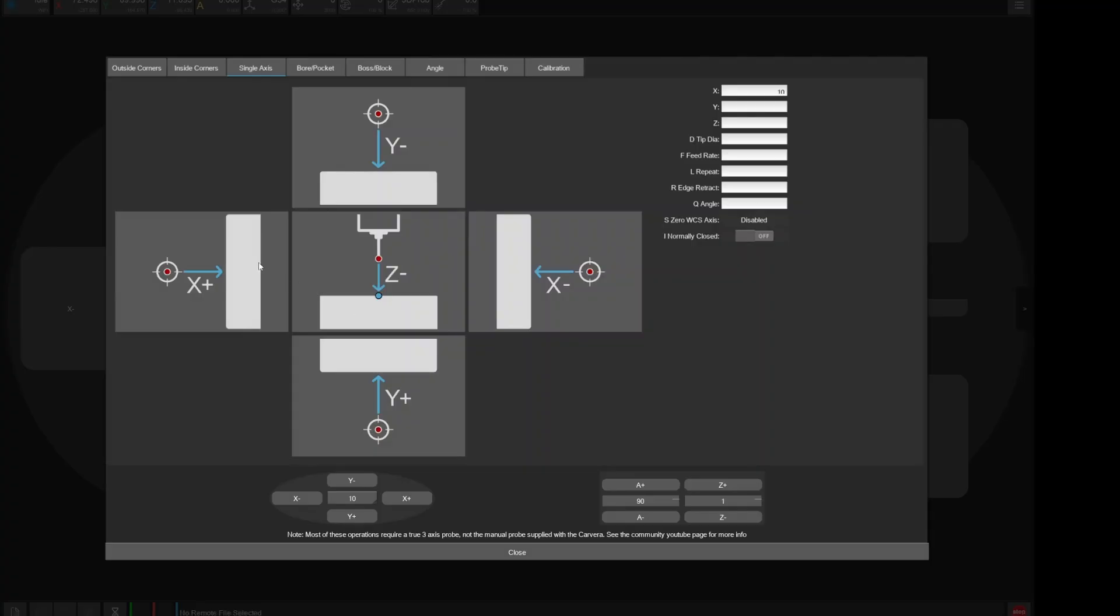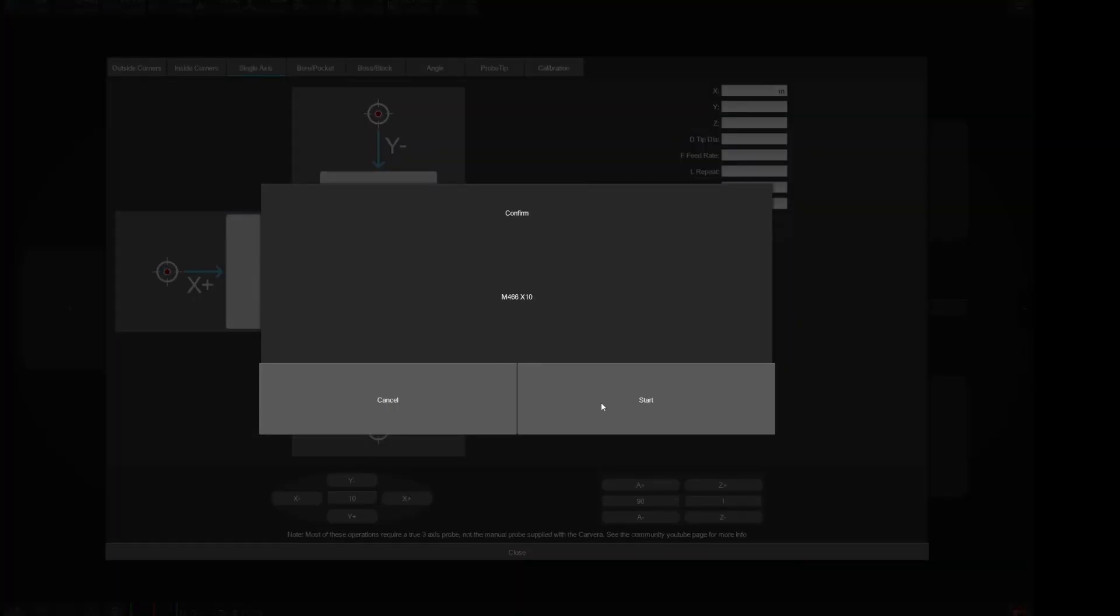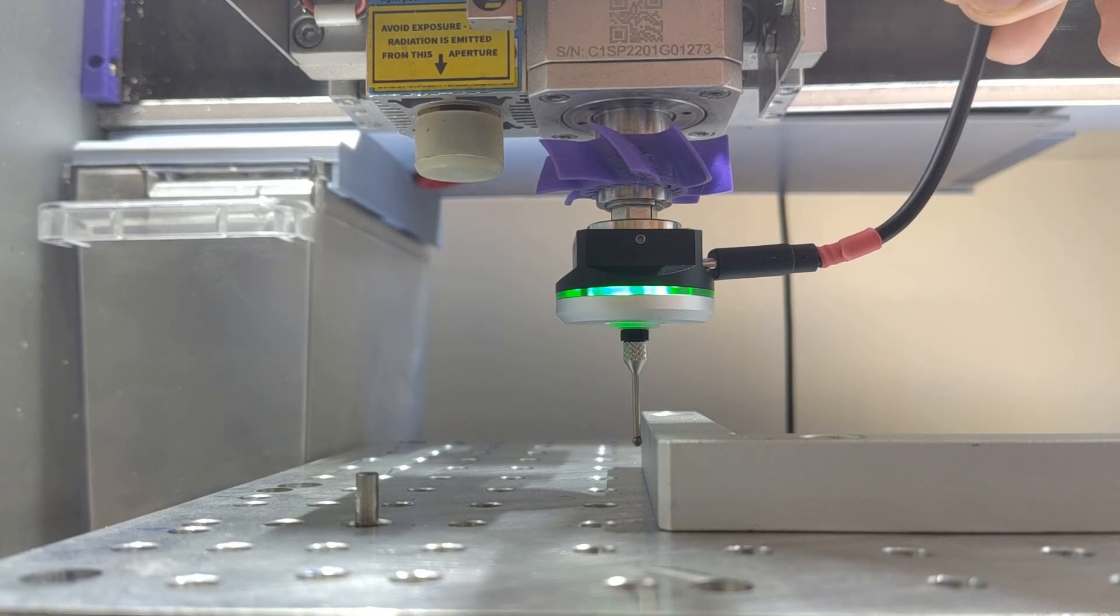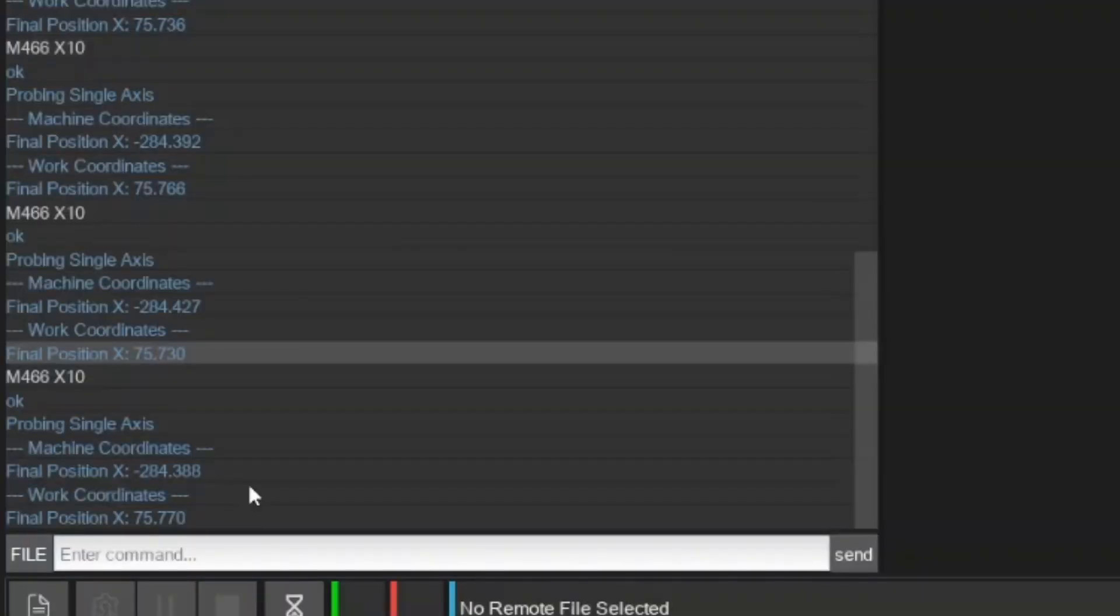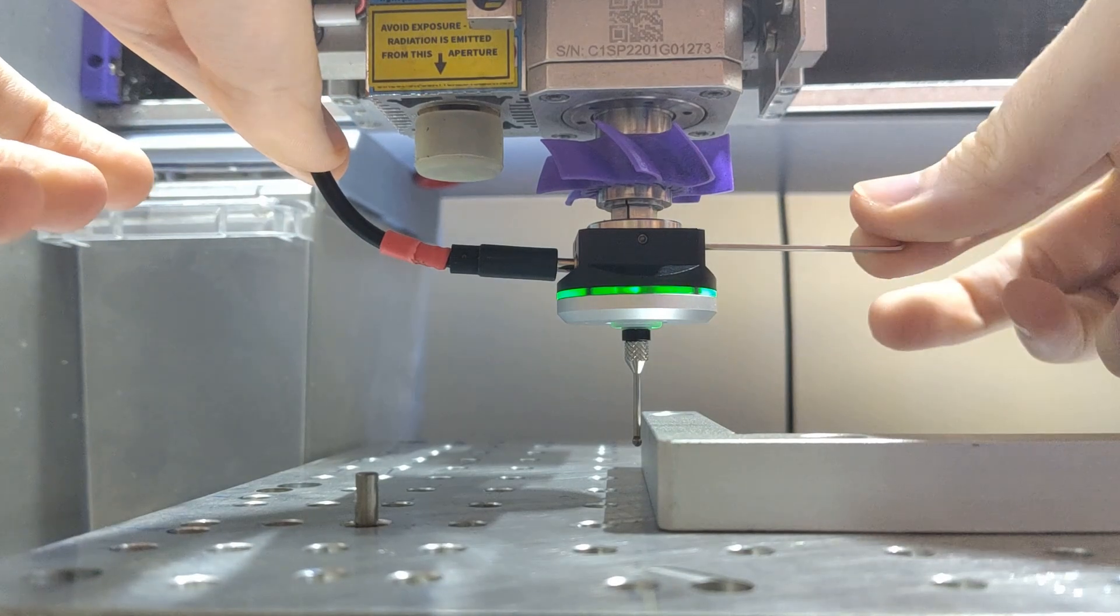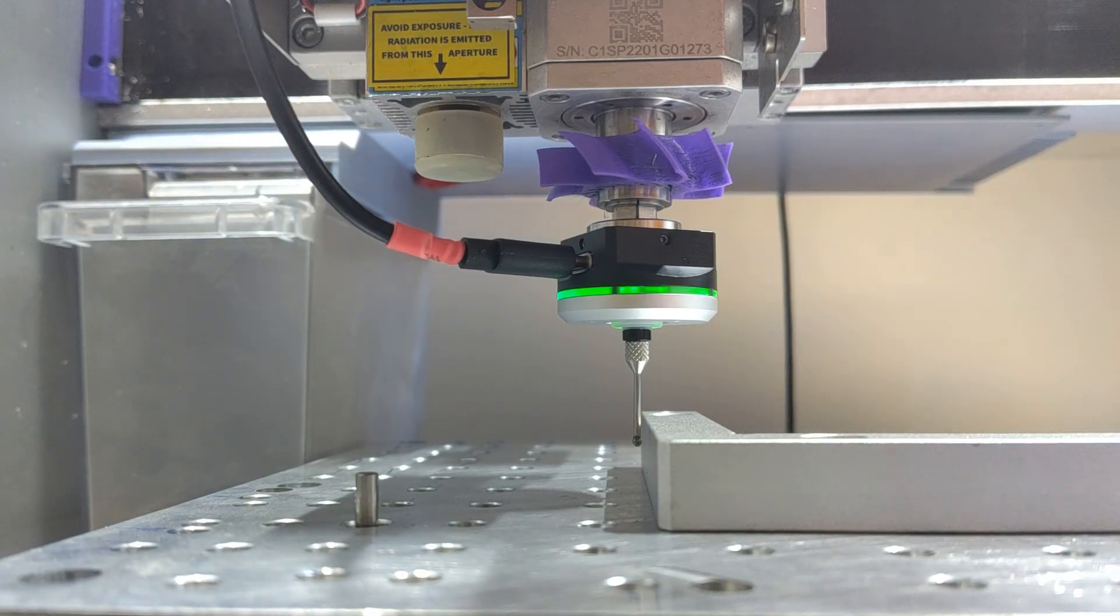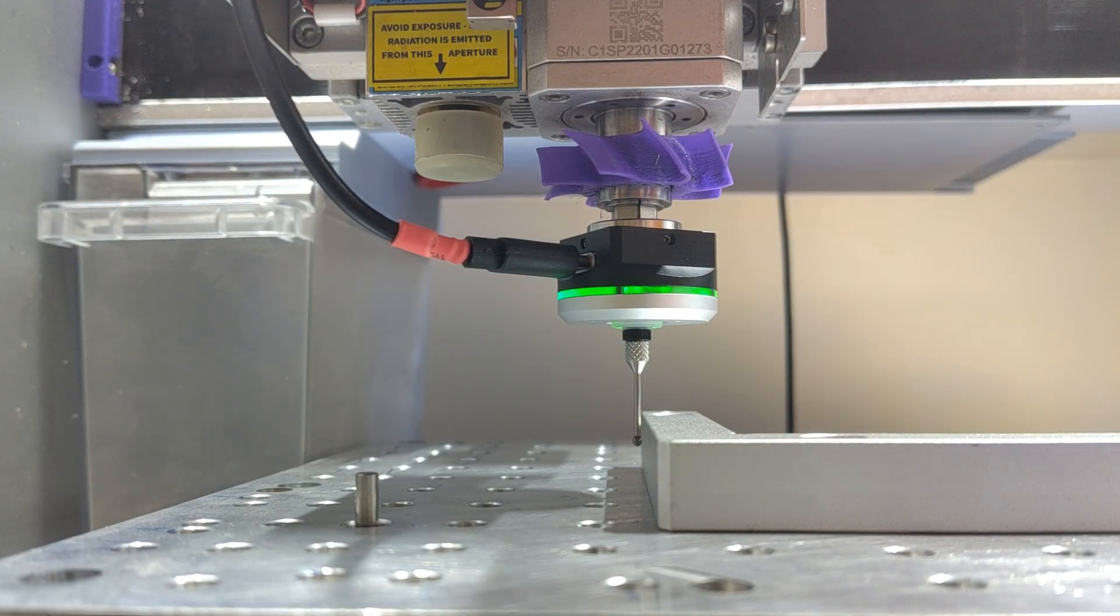The second method of centering the probe uses the probe's built-in sensors to find the high spots. To do this, use the probing screen to perform a single axis probe toward a solidly mounted surface, flip the probe 180 degrees, and probe again. Then check the MDI console for info on the probe values to determine which side is higher. Use the hex key to adjust and repeat at 90 and 270 degrees. Continue switching back and forth between rotations until you are happy with the results.